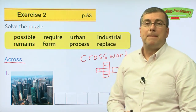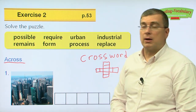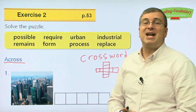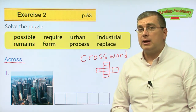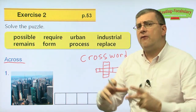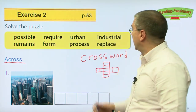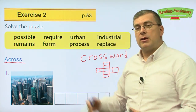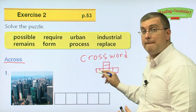The eight vocabulary words for the crossword puzzle are: possible, require, urban, industrial, remains, form, process, and replace. Those are the words we need to fit into the crossword puzzle.